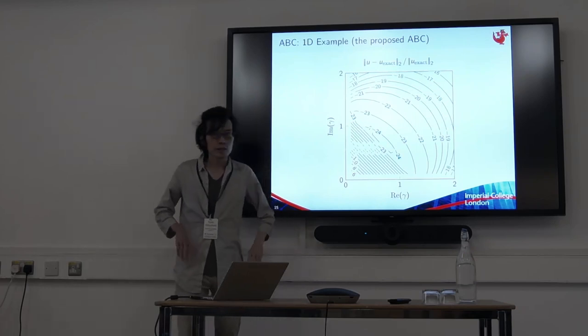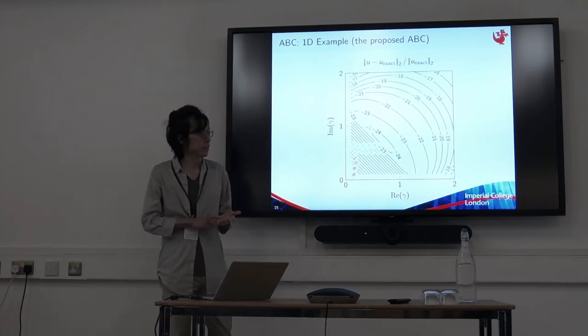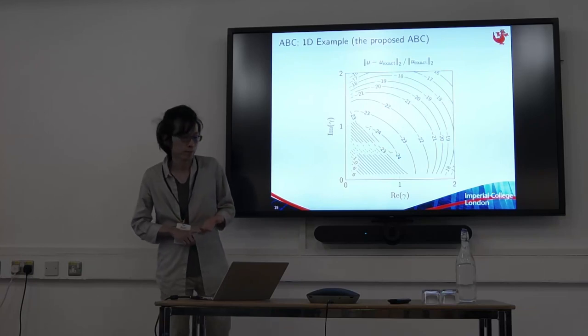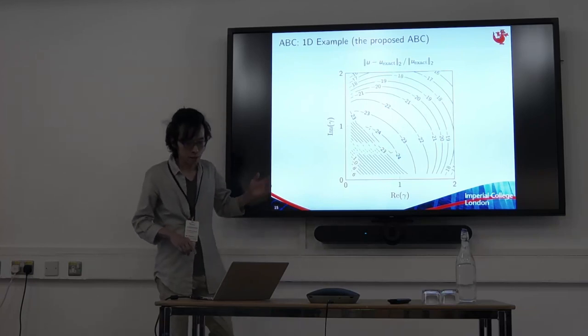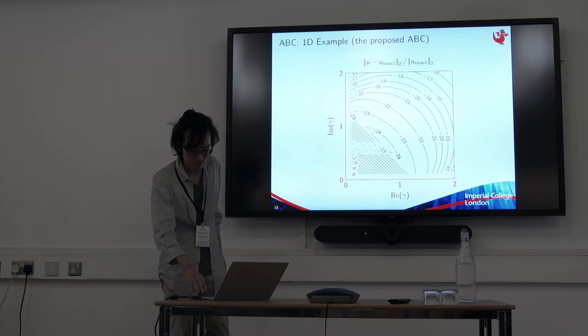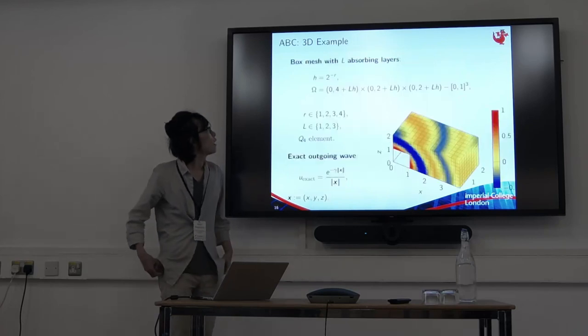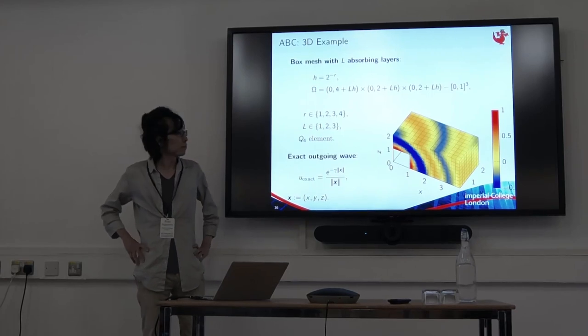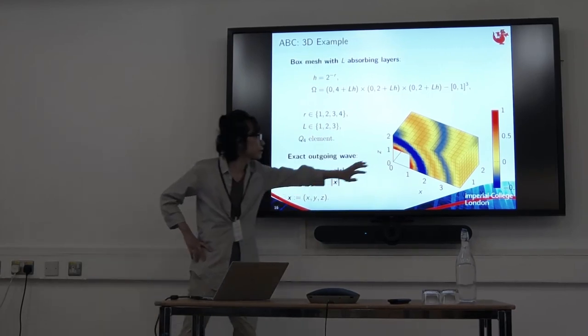We can use any order, p. If p is 1, it reduces to the existing PMDL formulation. And we can also show why this works, but I'm not going to talk about it. Finally, 3D example. This is our domain. H is the mesh size. R is the refinement level, which is chosen from 1, 2, 3, 4.